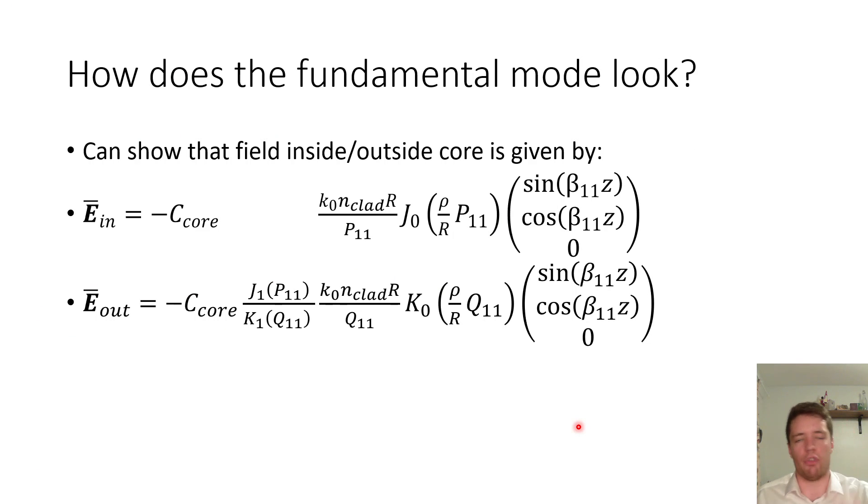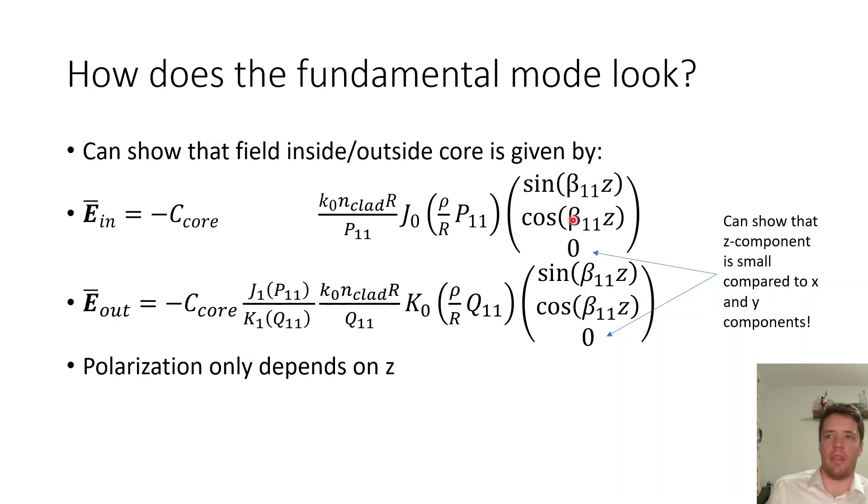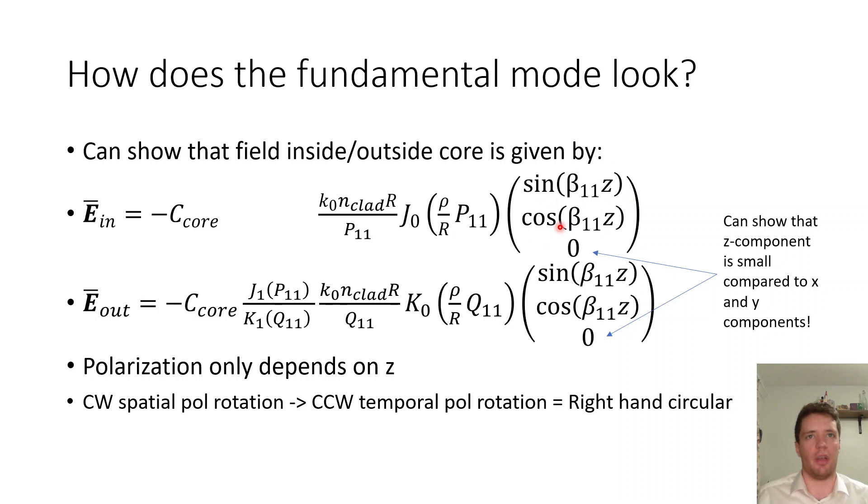But how does this fundamental mode with a single solution actually look? If you go through even more math details you'll find that the field inside of the core will look like the equation on top here and the field outside will look like the equation down here. So one small detail here is that technically there is also a z component of these two fields but in magnitude it's much smaller than the x and y components we can just neglect that. Note also that the polarization in any case only depends on the z coordinate, how far along the axis we are but it doesn't depend on the radial distance away from the core or the angular coordinate. So in other words if you have a single polarization at one location inside of this fundamental mode it's going to be the same all the way throughout the whole cross-section which is kind of convenient.